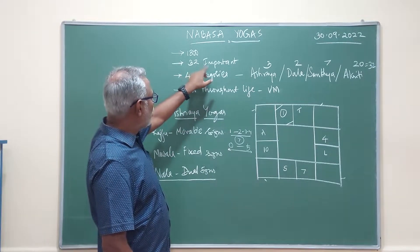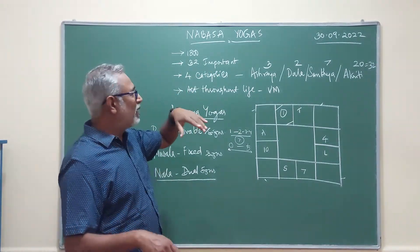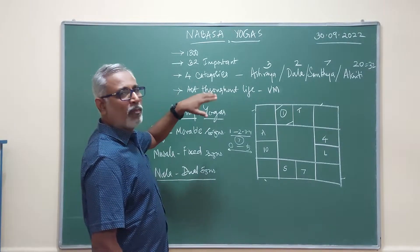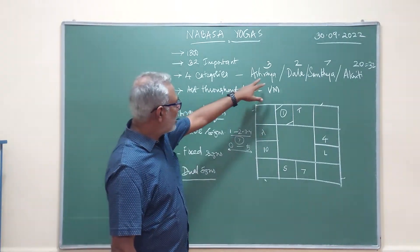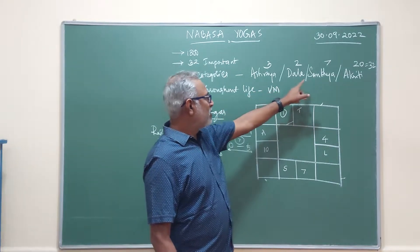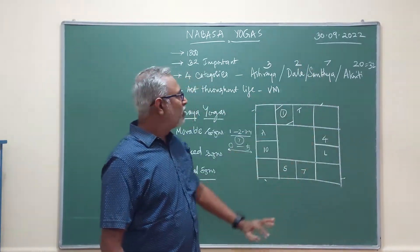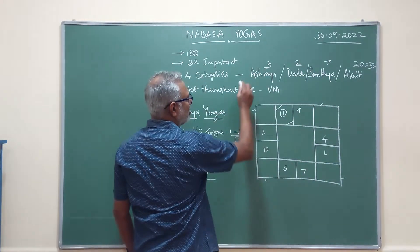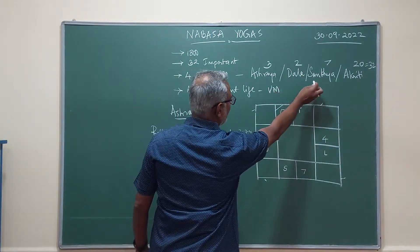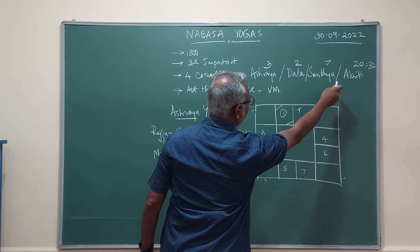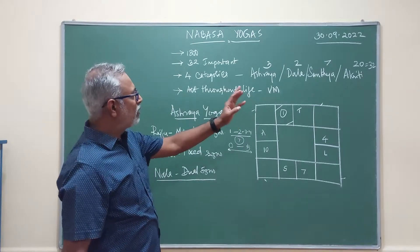The 32 important Yogas have been classified and categorized into four major categories: Ashraya, Dala, Sankhya, and Akriti. Ashraya Yoga has 3 Yogas, Dala Yoga has 2 Yogas, Sankhya has 7, and Akriti has 20 — totally 32.